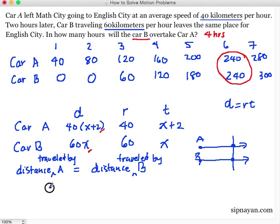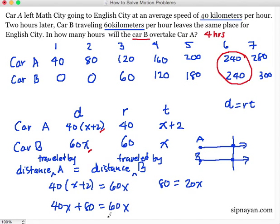So what is the distance traveled by A? This is 40 times X plus 2 equals the distance traveled by B, 60X. So 40X, by distributive property, 40 times X is 40X plus 40 times 2 is 80 equals 60X. Subtracting 40X from both sides, we have 80 equals 20X. Kasi minus 40X minus 40X, mawawala na ito. 80 na lang magtira sa left-hand side. And then 60X minus 40X is 20X. So 80 over 20 is equal to X. From here, 80 divided by 20 is 4, so X equals 4. Ibig sabihin, 4 hours.